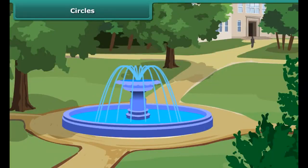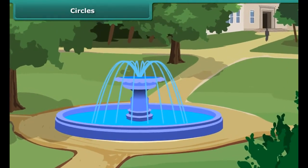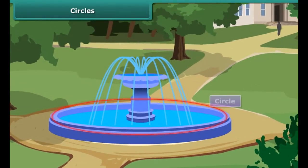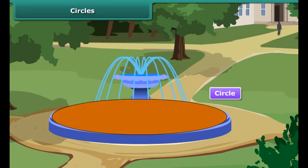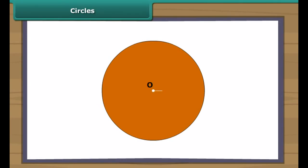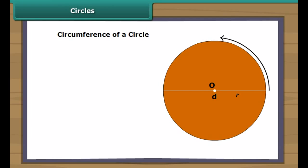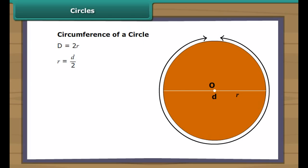Circles. Students, have you noticed the shape of the fountain? The fountain is in the shape of a circle. Can you measure the circumference of the circle? Yes. If you know the radius of the circle, then by using the formula of circumference of a circle. The circumference of a circle is the distance around a circular region — in other words, the boundary of the circle. The circumference of a circle is the product of a constant called pi and its diameter, or twice the product of pi and the radius of the circle.